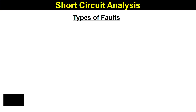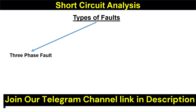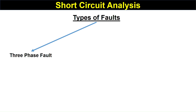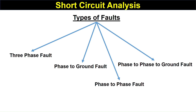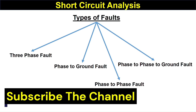Now, first of all, we should know how many types of faults we have. There are generally four types: number one is the three-phase fault, which we have already calculated from lecture number 18. Then there is a phase-to-ground fault, or line-to-ground fault. Then there is a phase-to-phase fault, or line-to-line fault. And then there is a double line-to-ground fault, or phase-phase-to-ground fault. We have completed the three-phase fault, now we will complete the remaining three.